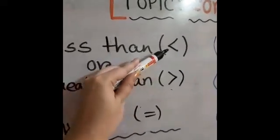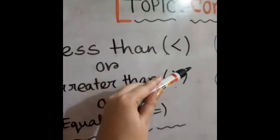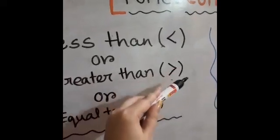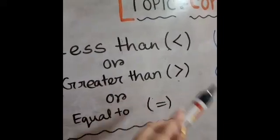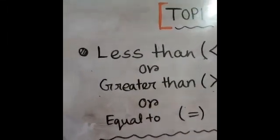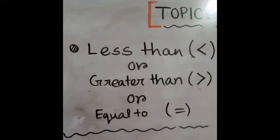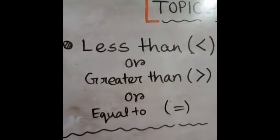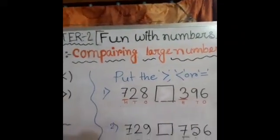The open face always opens towards the bigger number, and the pointer faces towards the smaller number. We use the equal sign when both numbers are the same. Now let us come to our main topic, that is comparing large numbers.